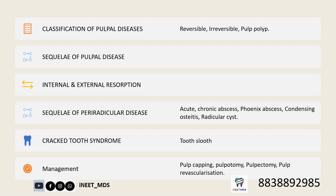You should read about pulp capping — direct pulp capping and indirect pulp capping. Then know about pulpotomy, partial pulpotomy also called Cvek pulpotomy, complete pulpotomy, then pulpectomy, and pulp revascularization. Under that, know about PRP (platelet-rich plasma) and PRF (platelet-rich fibrin). Just read about apexification and apexogenesis — you will read that again in pediatric endodontics, but you should be aware of it.